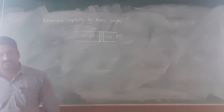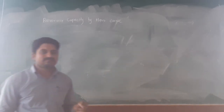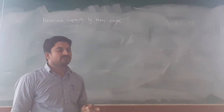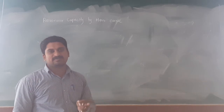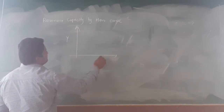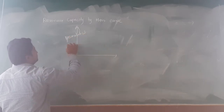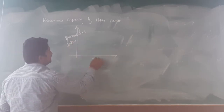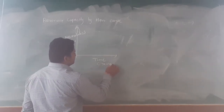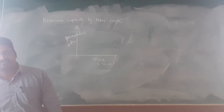Our topic is calculation of reservoir capacity using the mass curve. The mass curve is a curve prepared from the flood hydrograph. It is nothing but the accumulated inflow into the reservoir with respect to time — accumulated inflow on the y-axis and time on the x-axis. Time is considered in years, and data over several years is taken to create the mass curve.